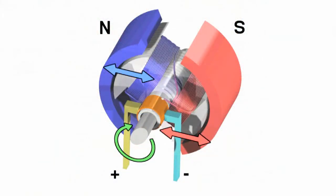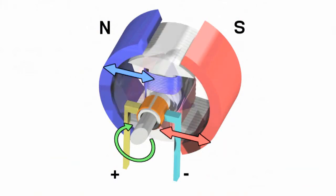An alternating current motor is an electrical motor powered from alternating current and can be of two types. A synchronous motor is an alternating current motor with a rotor that rotates synchronously with the supply voltage magnetic field. An asynchronous motor is an alternating current motor where the rotor rotation frequency differs from the rotation frequency of the magnetic field produced with supply voltage.